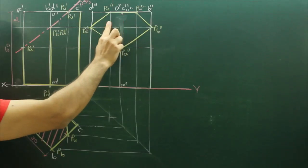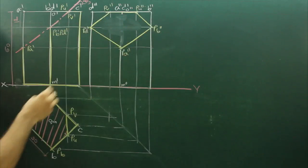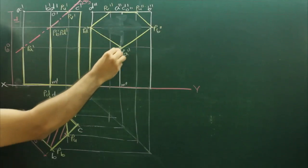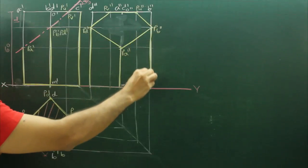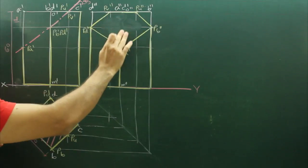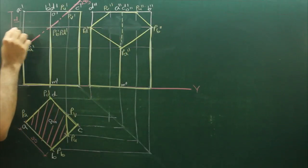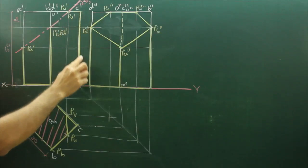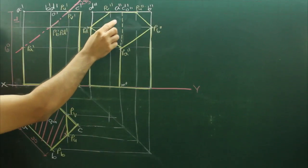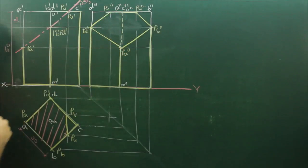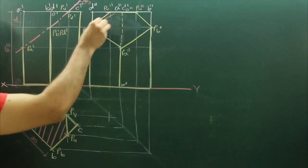This line will go away, this part will be dotted, all these edges will be dotted, and this edge will be dotted, because when you see from this side, this edge C dash, you won't be able to see, so that will be dotted. This we need to hatch.